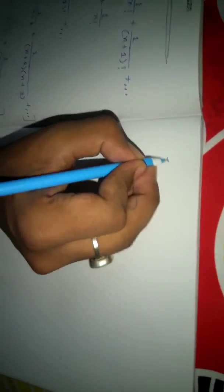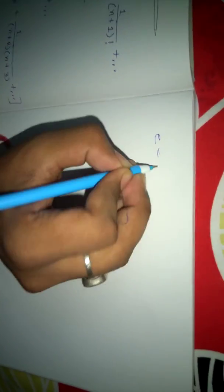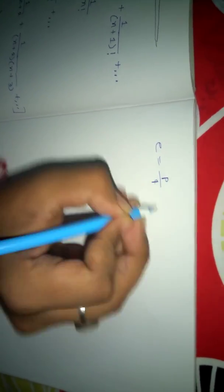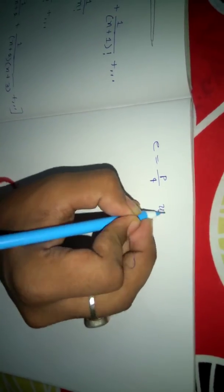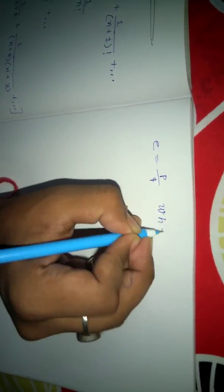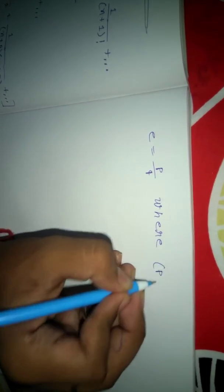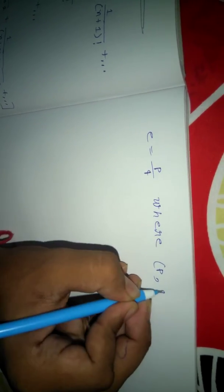And now this is a very important equation to prove that e is an irrational number. Now, if possible, let e be a rational number. Then e can be expressed as e = p/q, where gcd(p, q) = 1.